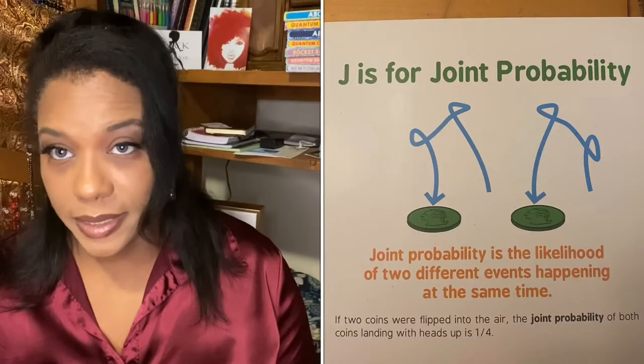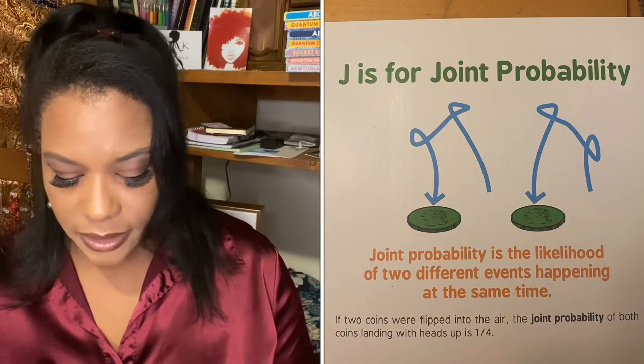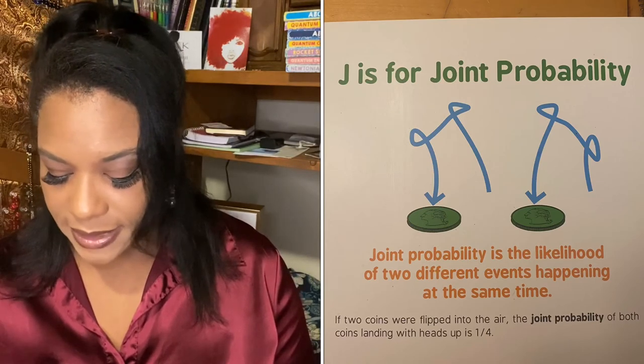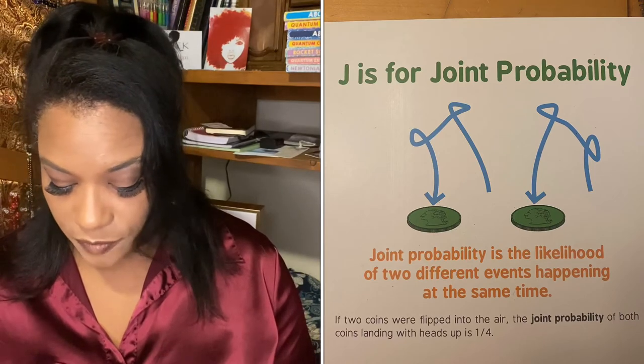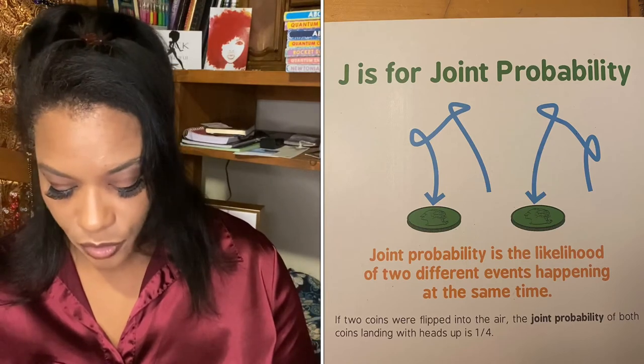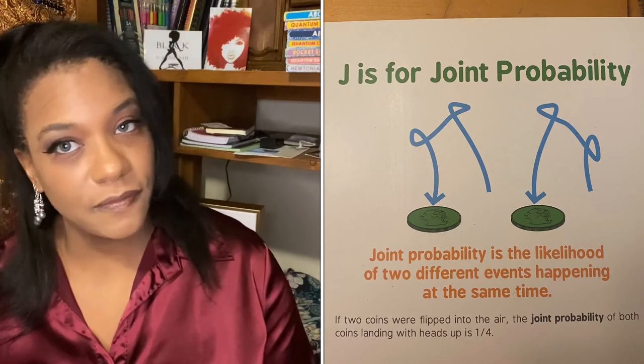J is for joint probability. Joint probability is the likelihood of two different events happening at the same time. If two coins were flipped into the air, the joint probability of both coins landing with heads up is one fourth.